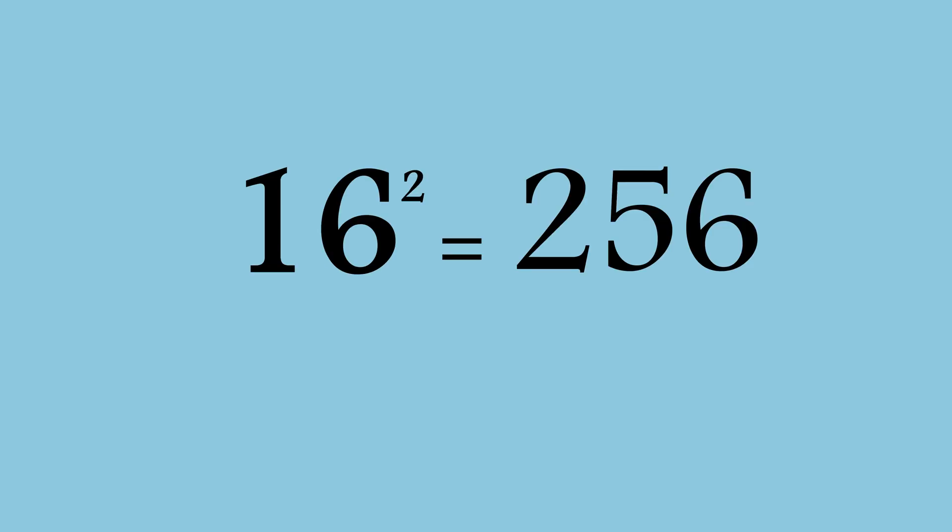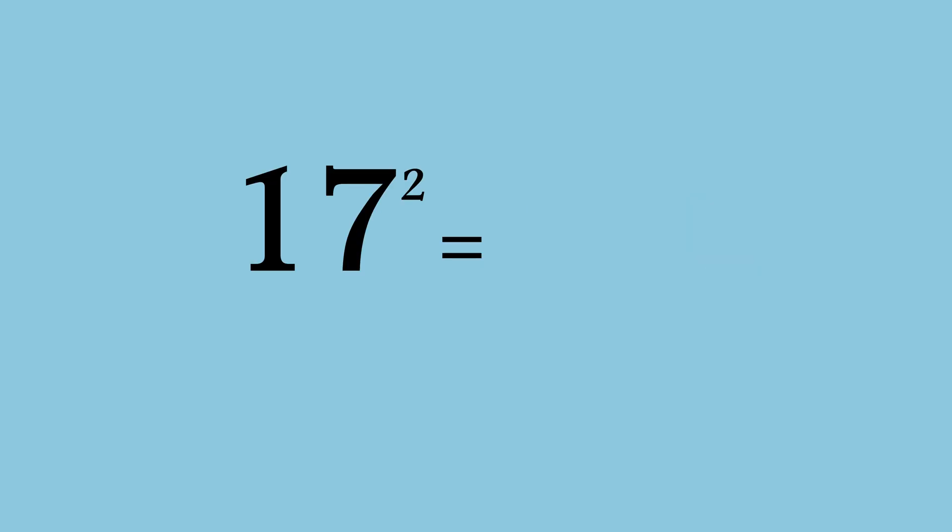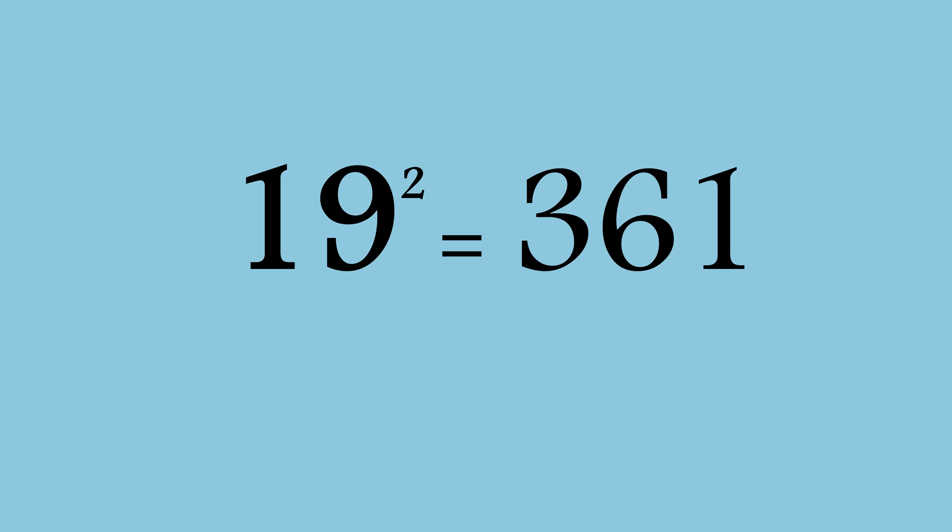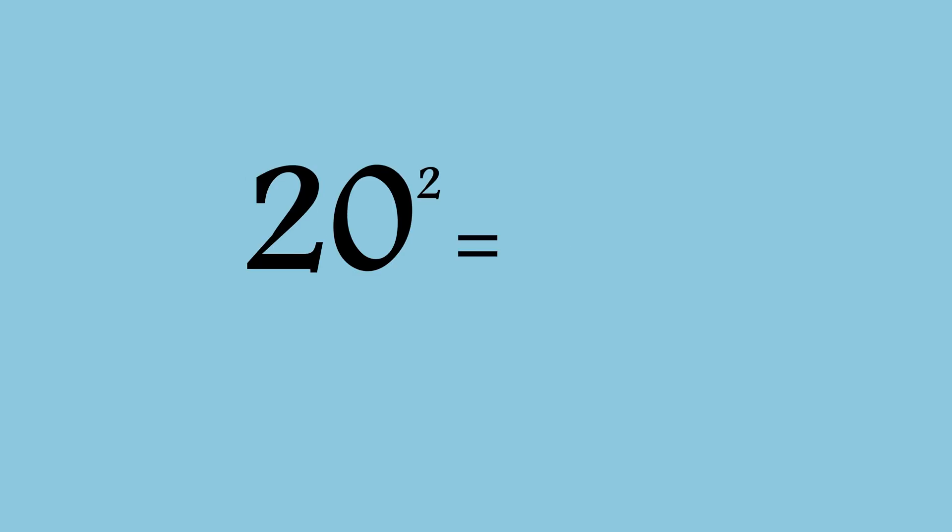16 square is 256. 17 square is 289. 18 square is 324. 19 square is 361. 20 square is 400.